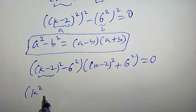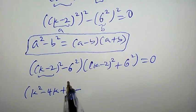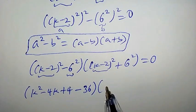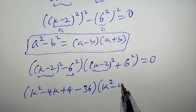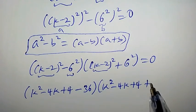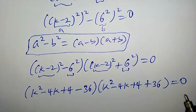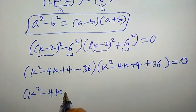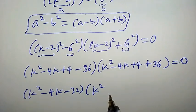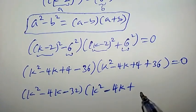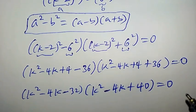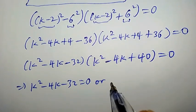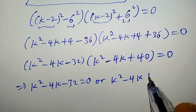Let's proceed further. If you expand the first bracket you are going to have k squared minus 4k plus 4 minus 36, equal to 0. And expanding the second bracket gives k squared minus 4k plus 4 plus 36, which is 40, equal to 0. This gives us two equations: k squared minus 4k minus 32 equal to 0, or k squared minus 4k plus 40 equal to 0.